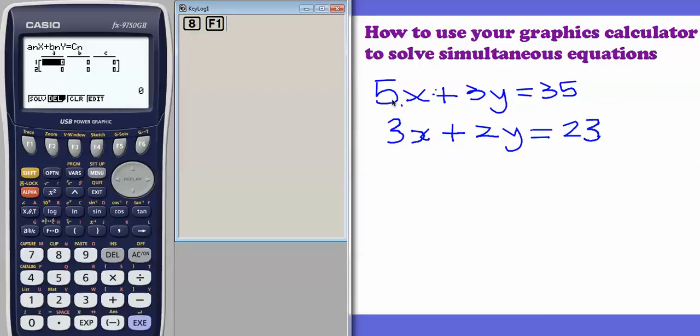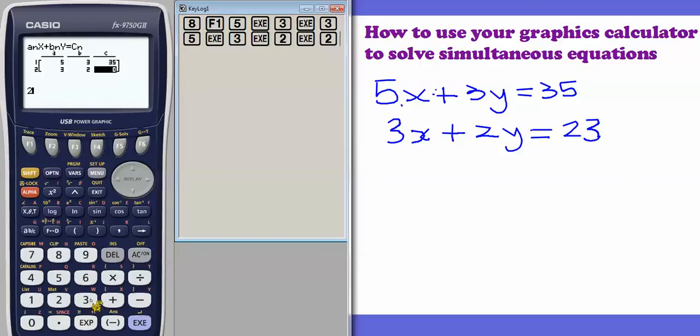So all we now need to do is put in our coefficients. For the first one, it's going to be A is 5, B is 3, C is 35. So we just input them, 5, and it moves along automatically, which makes it really easy, and then 35. And then for the second one, 3, 2, and 23. When you've input them, obviously you can check. If you want to change any, you can just move around with the arrow keys. And then when you're ready, you can just press F1 for solve.